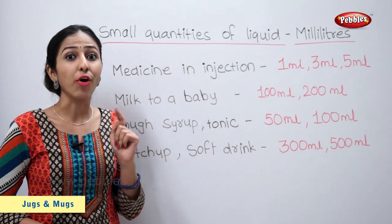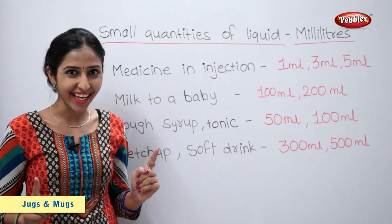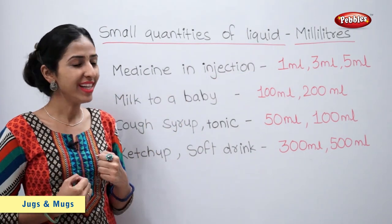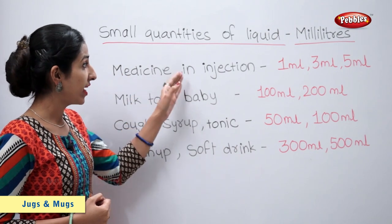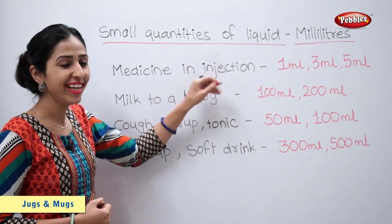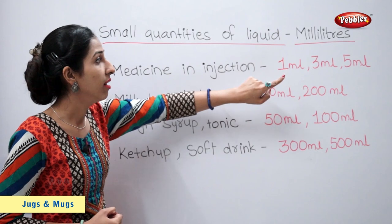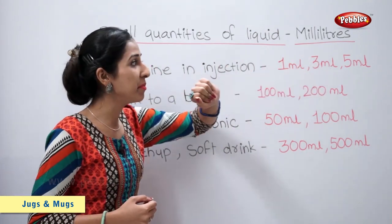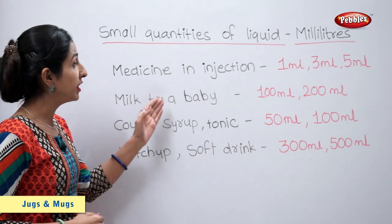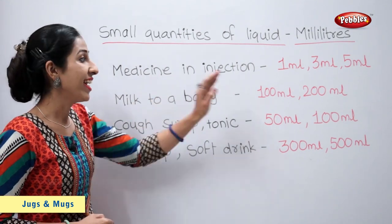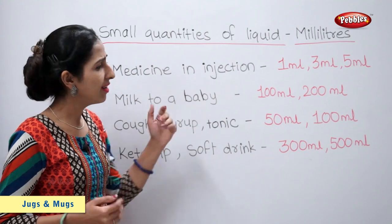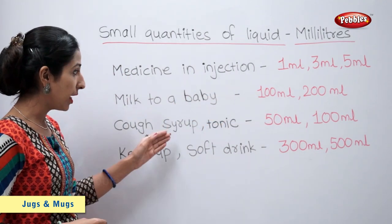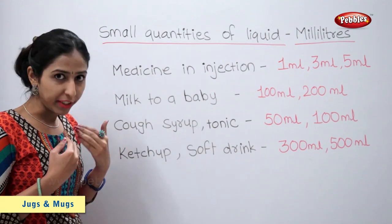Small quantities of liquid are measured in millilitres. For example, medicine in an injection is 1 ml, 3 ml, or 5 ml. Milk given to a baby is about 100 ml or 200 ml. Cough syrup or tonic that we buy comes in 50 ml or 100 ml.